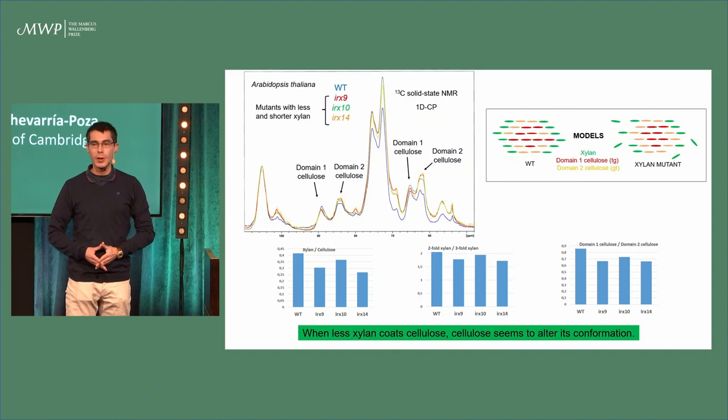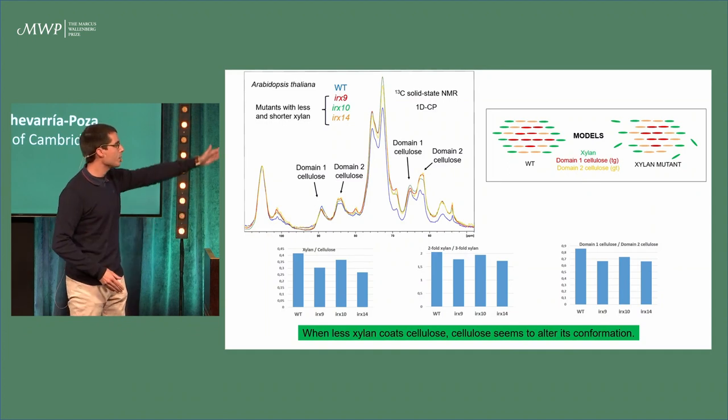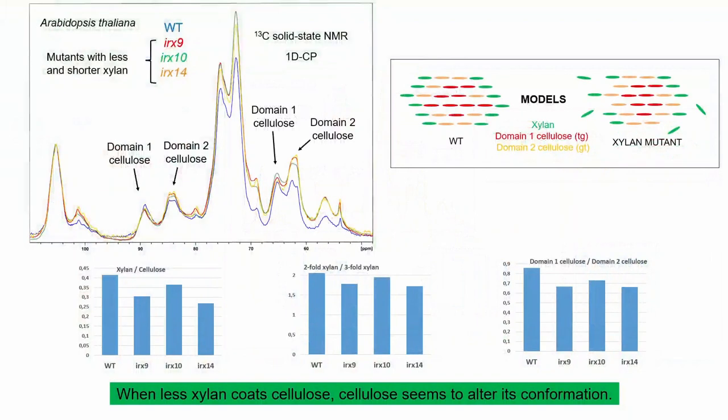This is one of the spectra that we got. If you have a look, you can see that the mutants with short and less xylan, shown in colors other than blue, seem to have more of the domain two cellulose found on the surface. We can actually quantify this, and what we realize is that the mutants with short xylan, as expected, have less xylan, but very interestingly, they seem to have more xylan in the unbound state.